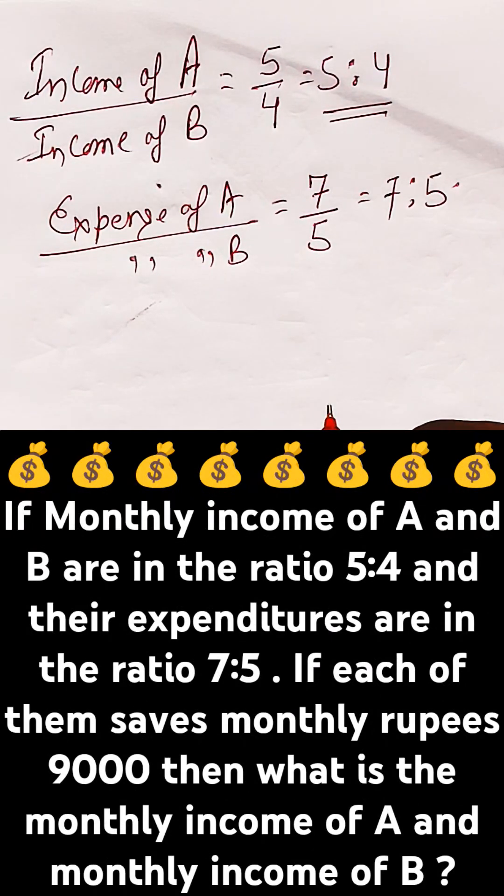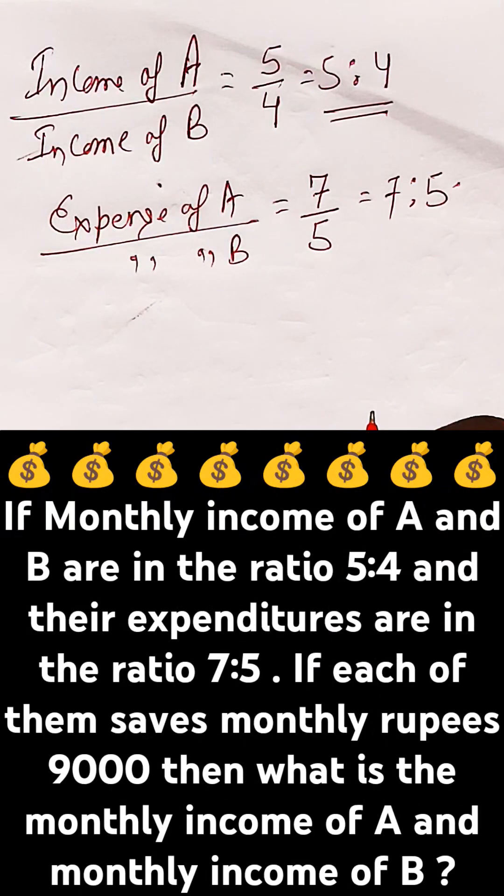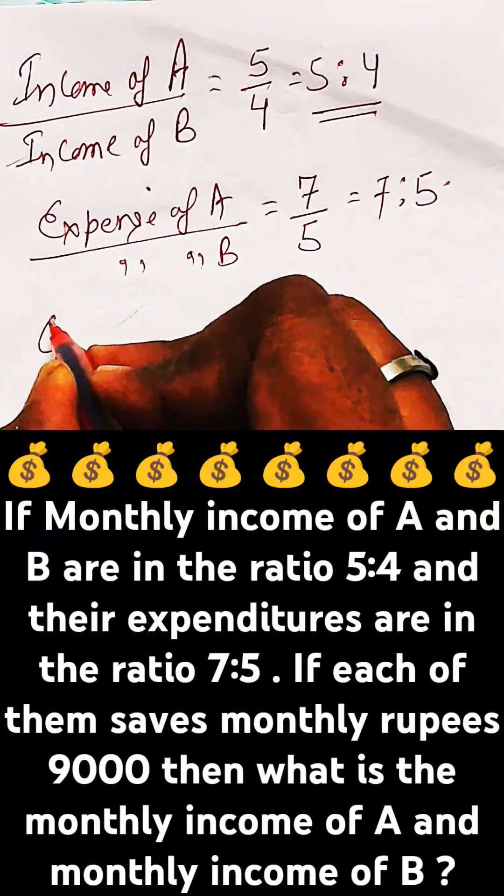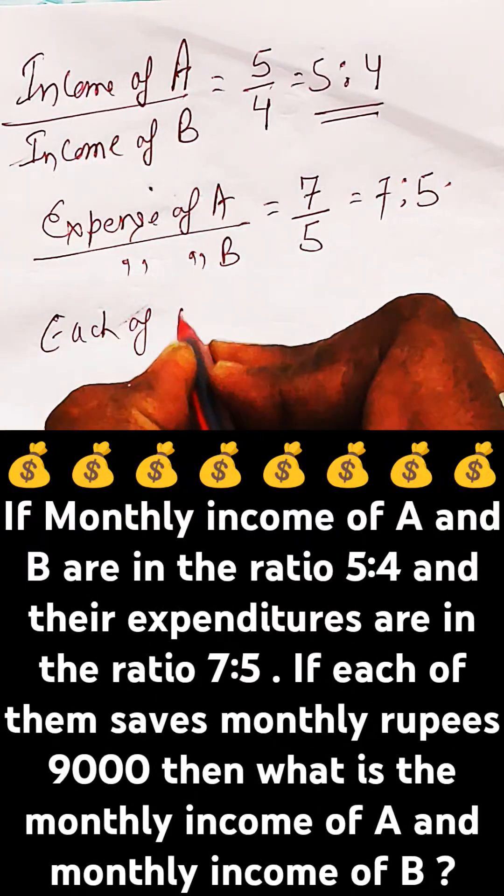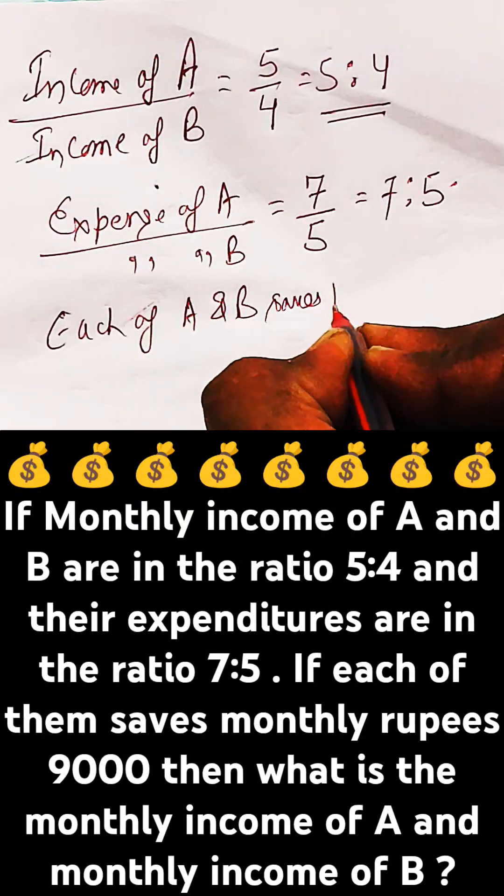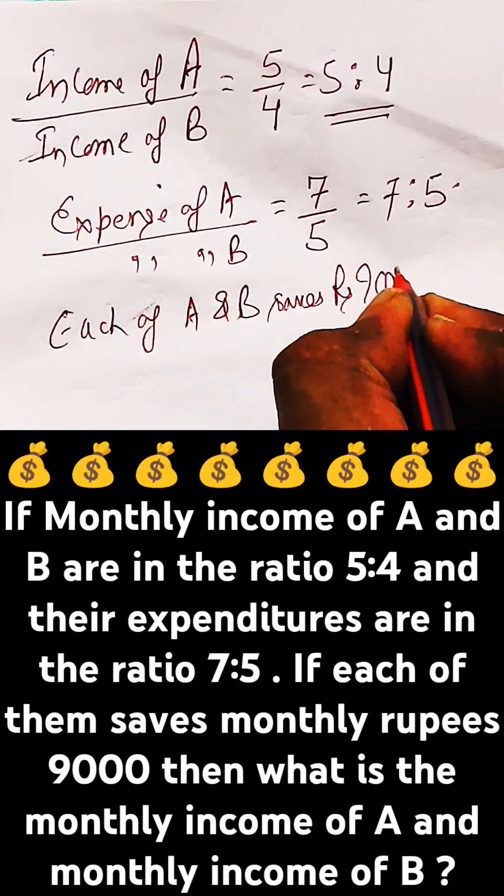It's given that if each of them saves monthly rupees 9000, then what is the monthly income of A and B? So each of A and B saves rupees 9000.